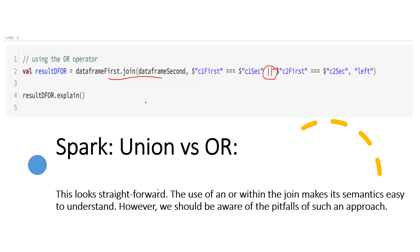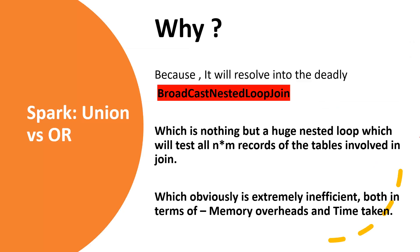This particular Spark join command looks pretty straightforward, and there's no obvious problem with it. But the use of an OR operator within the join may make it semantically easier to understand from a functional perspective. However, there is a bigger caveat and pitfall in such an approach — the use of OR within a join condition results in a deadly broadcast nested loop join.